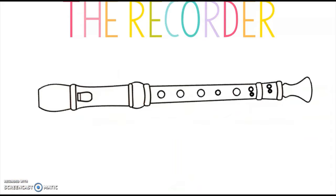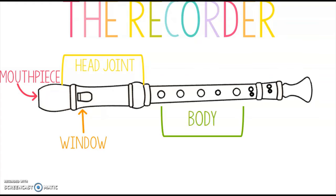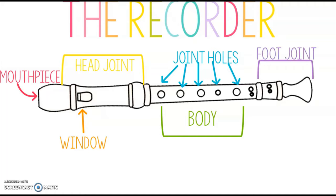Now that you have your recorder in your hand, let's look at it. This right here is called the mouthpiece. This is called the window, and the entire first part is called the head joint. The middle piece is called the body, and the body is covered in finger holes. The last piece is called the foot joint, and you'll notice there are two sets of holes called double holes — one set on the body and one on the foot joint.